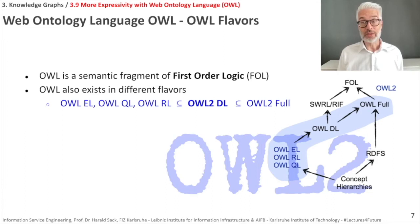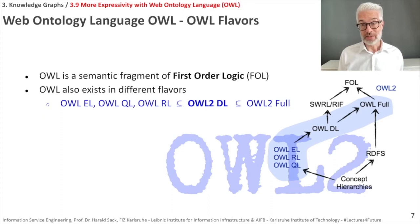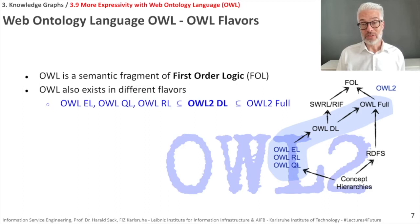What comes on top in first-order logic is quantification. There is universal quantification and existential quantification. Universal quantification means you can make statements about sets of things — for example, that a specific statement holds for all individuals of a specific constraint. Existential quantification means a specific statement holds for at least one individual. Universal means 'this holds for all,' and existential means 'at least one exists.'